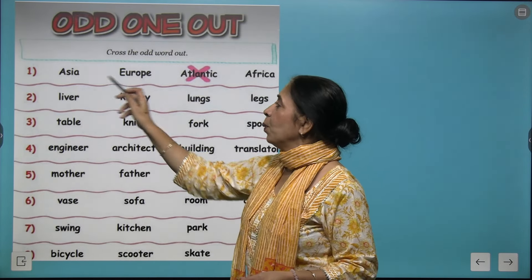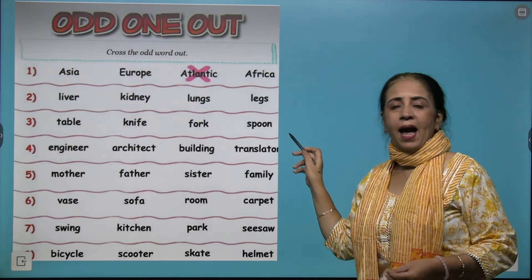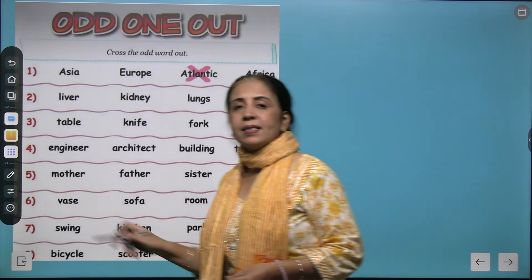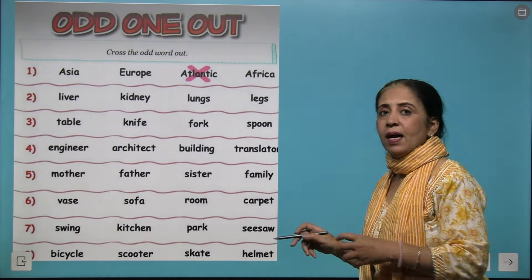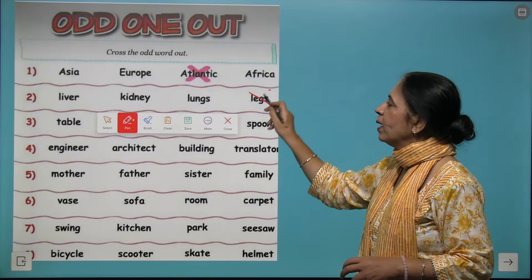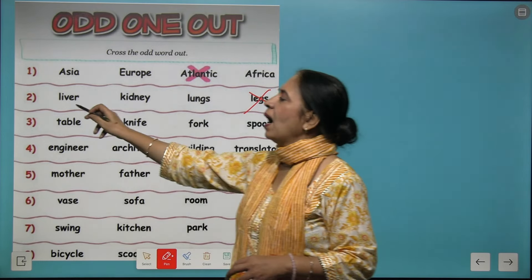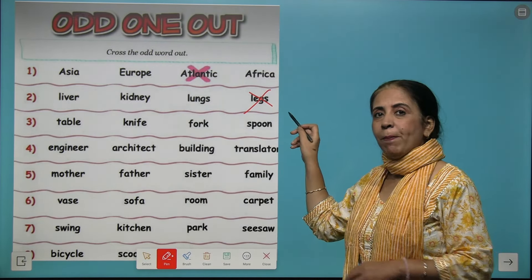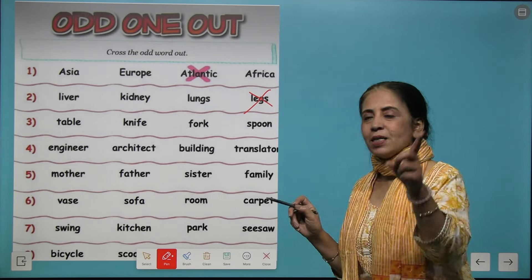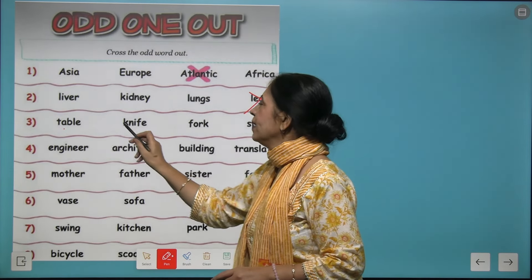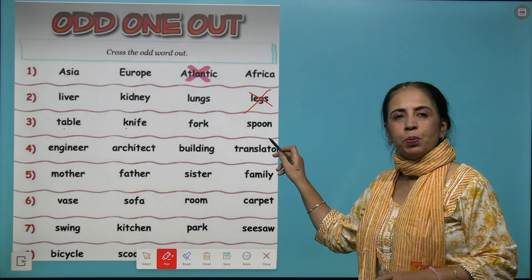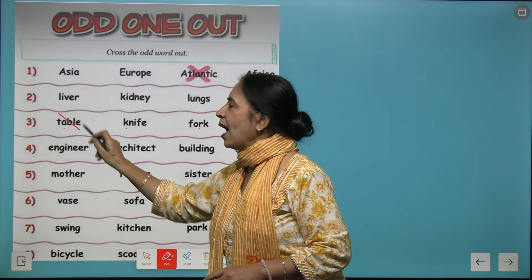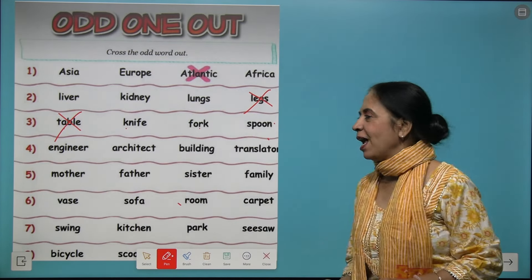Next one is liver, kidney, lungs, and legs. Legs is the external part of the body while the other three are internal organs, so we pick it out. Next one: table, knife, fork, and spoon. All of knife, fork, and spoon are cutlery, so you knock out table.